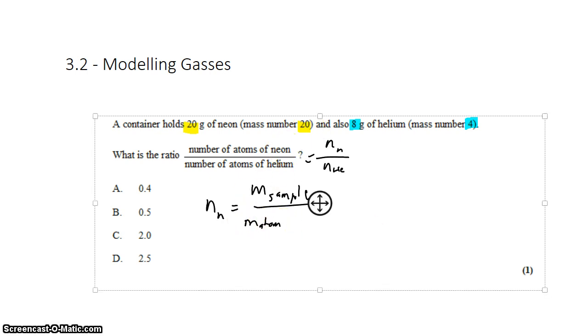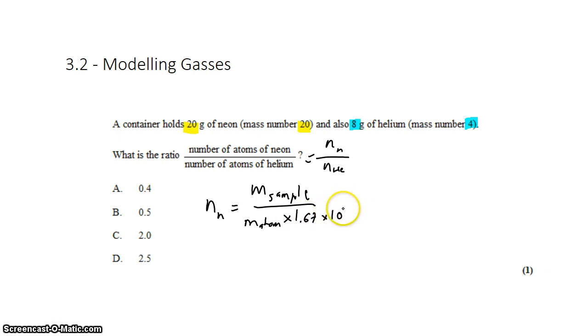Now, we do have a unit mismatch, and we're going to see in a minute why that doesn't matter. But let's pretend for a minute that it does. If we want to convert 20 atomic mass units into grams, we just need to multiply by 1.67 times 10 to the negative 23 grams per amu. So that gives us 20 grams in the sample divided by 20 amu times 1.67 times 10 to the negative 23 grams per amu.